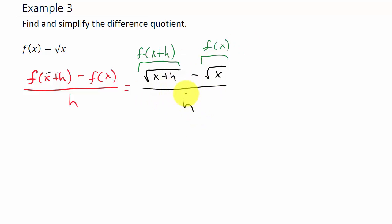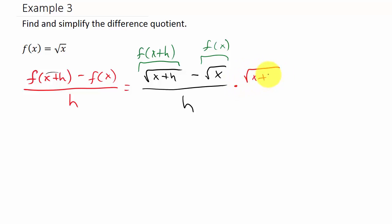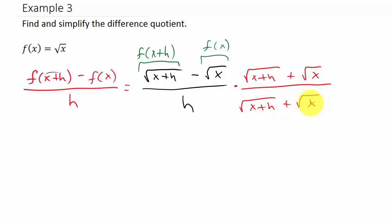Now I've got to simplify this. Remember, we want to get the h out of the denominator. So I'm going to rationalize the numerator. You probably remember this from simplifying radicals, except there you'd rationalize the denominator — here we're rationalizing the numerator. I'm going to multiply the numerator and denominator by the conjugate of the numerator, changing the sign in the middle: square root of x plus h plus square root of x.